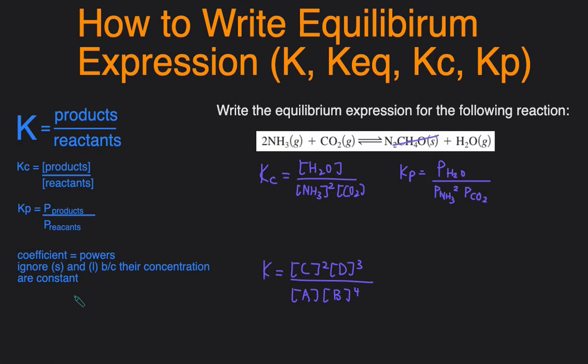And there you have it. That's how you would write the equilibrium constant expression for any reaction. So just to recap what we've learned, K is products divided by reactants. If it's Kc, use concentration. If it's Kp, use pressure. The coefficients in the reaction become the exponents in the expression. And ignore solids and liquids because their concentrations are constant.